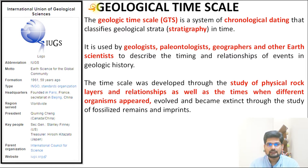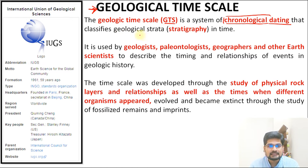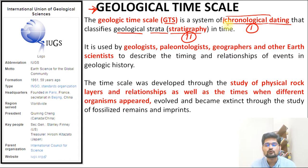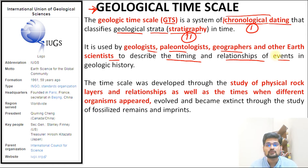Before we go ahead, please like and subscribe to our channel and don't forget to share the videos with others as well. The geological time scale — GTS in short — is a system of two things: chronological dating, where we date events in sequence of time, and the classification of geological strata, which is called stratigraphy. It is used by geologists, paleontologists, geographers and other earth scientists to describe the timing and relationship of events.